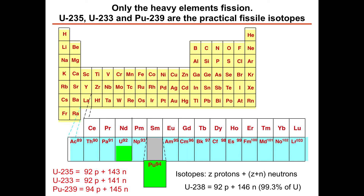The reason they're the practical fissionable materials is that at the bottom of the periodic table, there are so many subatomic particles — particularly so many protons and neutrons — that the nucleus becomes very unstable. Therefore it's easy to split, and it only takes another neutron of almost any energy to split these materials. When you split them, you get that factor of millions in energy release. That's essentially what you need.